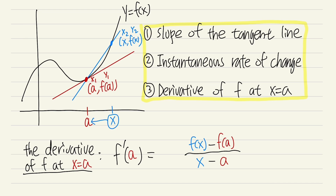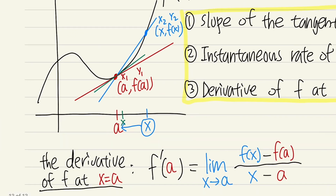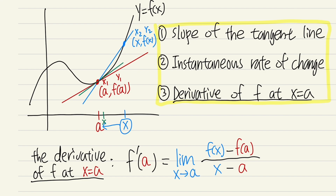That is the idea of taking the limit — we want the limit as x approaches a. Imagine zooming in: x is now very close to a, you go up to the curve and connect the red and green dots. As you keep approaching a, the line we draw becomes more and more like the tangent line. So this is how you find the slope of the tangent line, the instantaneous rate of change, and the derivative of the function at a.